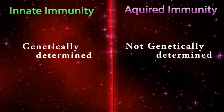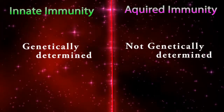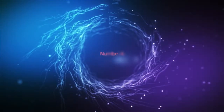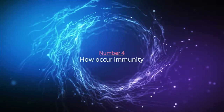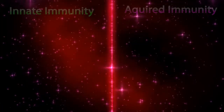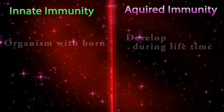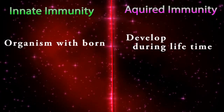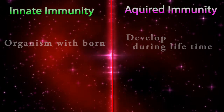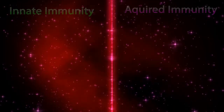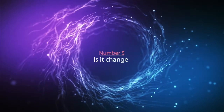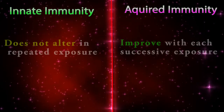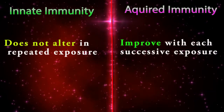Difference number three — genetic factor: innate immunity is always genetically determined, but acquired immunity is not genetically determined. Difference number four — how immunity occurs: innate immunity is present in organisms from birth, but acquired immunity develops during a lifetime.